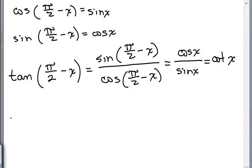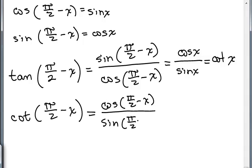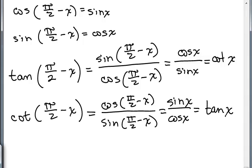What if we wanted to know what the cotangent of pi over 2 minus X is? We could use the same reasoning: that's just the cosine of pi over 2 minus X over the sine of pi over 2 minus X. But that gives us the sine of X over the cosine of X, which is the tangent of X. There's our fourth cofunction identity.